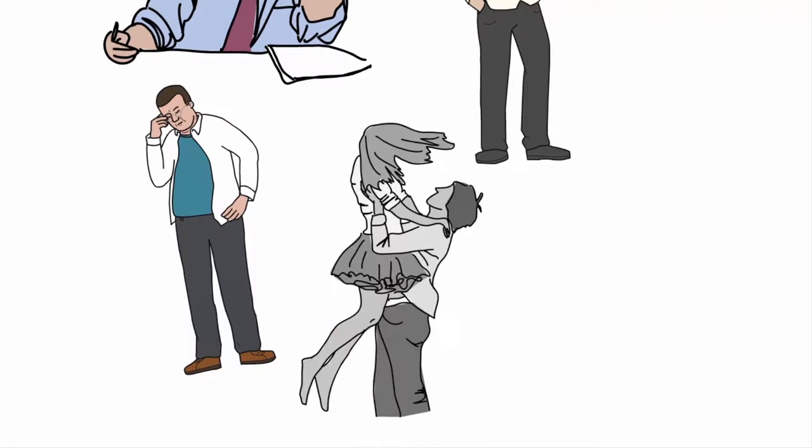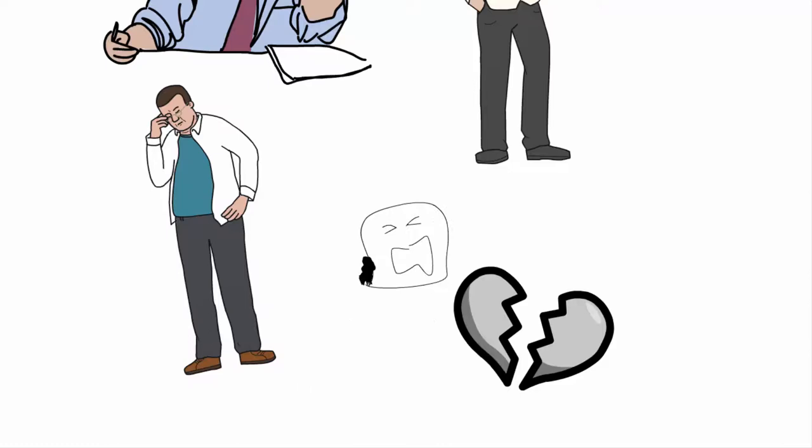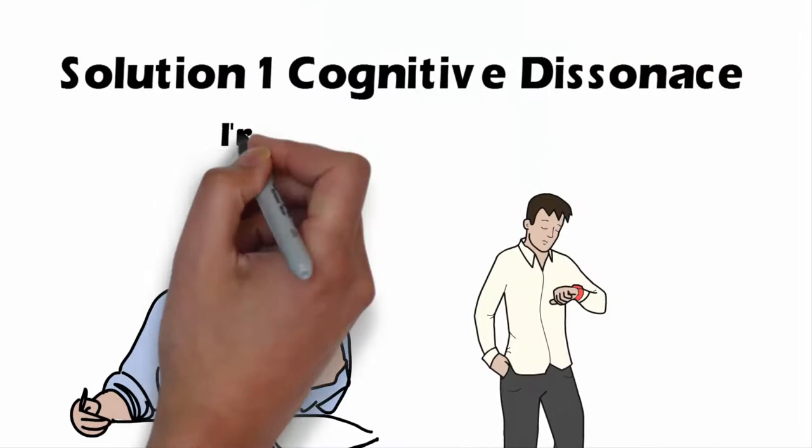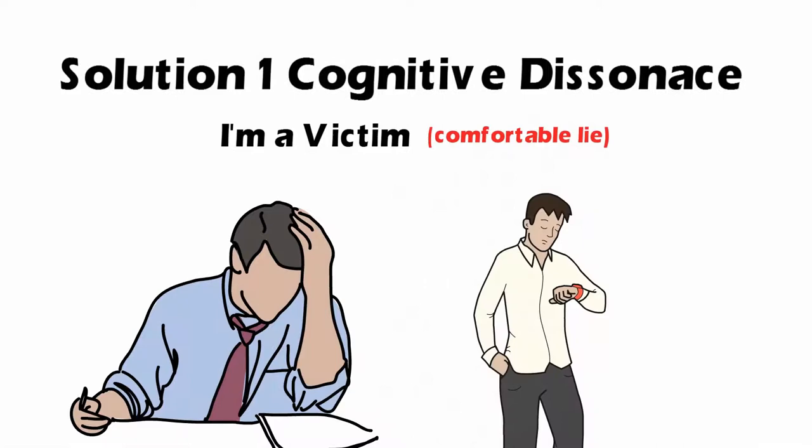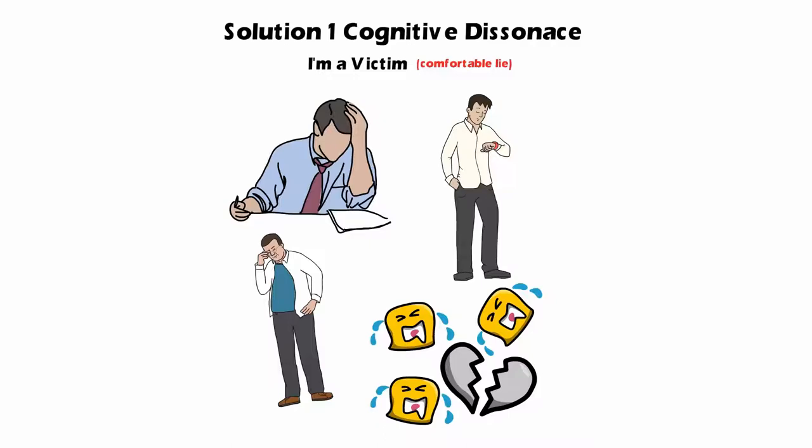The first is the cognitive dissonance one. That's where he cries and he waits and he ends up alone. Maybe he even tells himself all women are liars and cheaters and she broke my heart. So basically, it's a bunch of crying and sadness. This strategy could be round up as I'm a victim or which I call a comfortable lie. Well, the problem with this solution is rather obvious. It's a bunch of sadness and crying and it doesn't really help Mark at all.